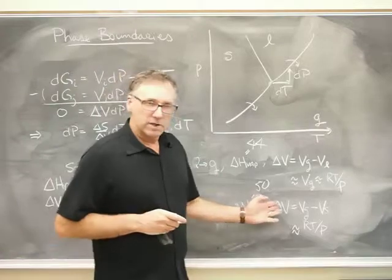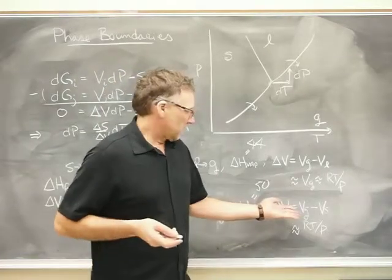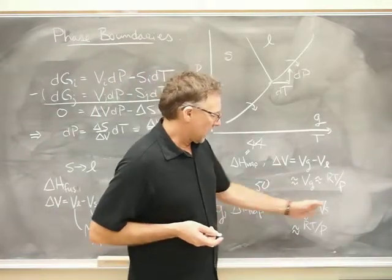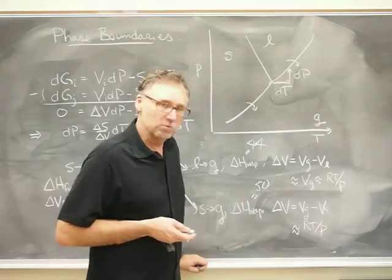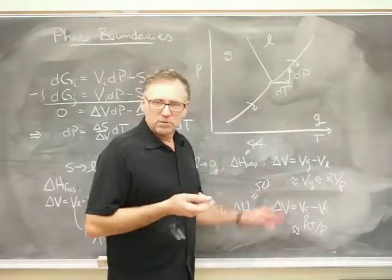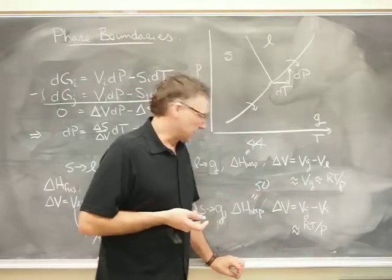And the change in the volume actually turns out to be about the same because we still have the volume of the gas. The volume of ice is much, much smaller than the volume of the same number of moles of water. Same thing, we end up with the Clausius-Clapeyron equation again.